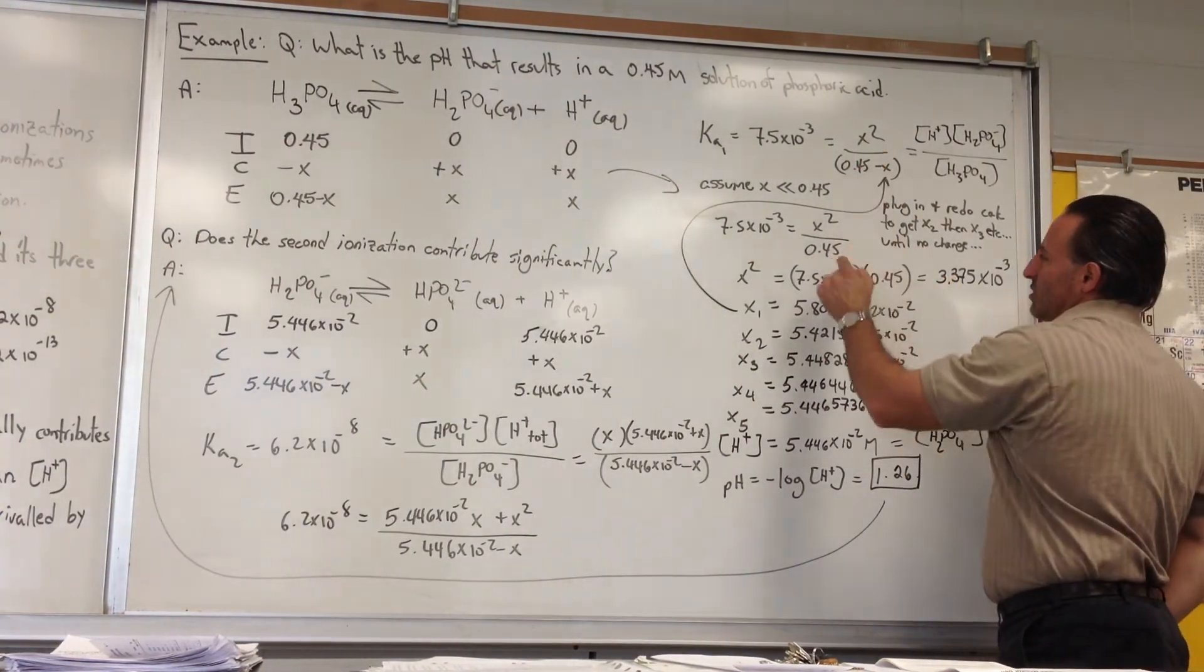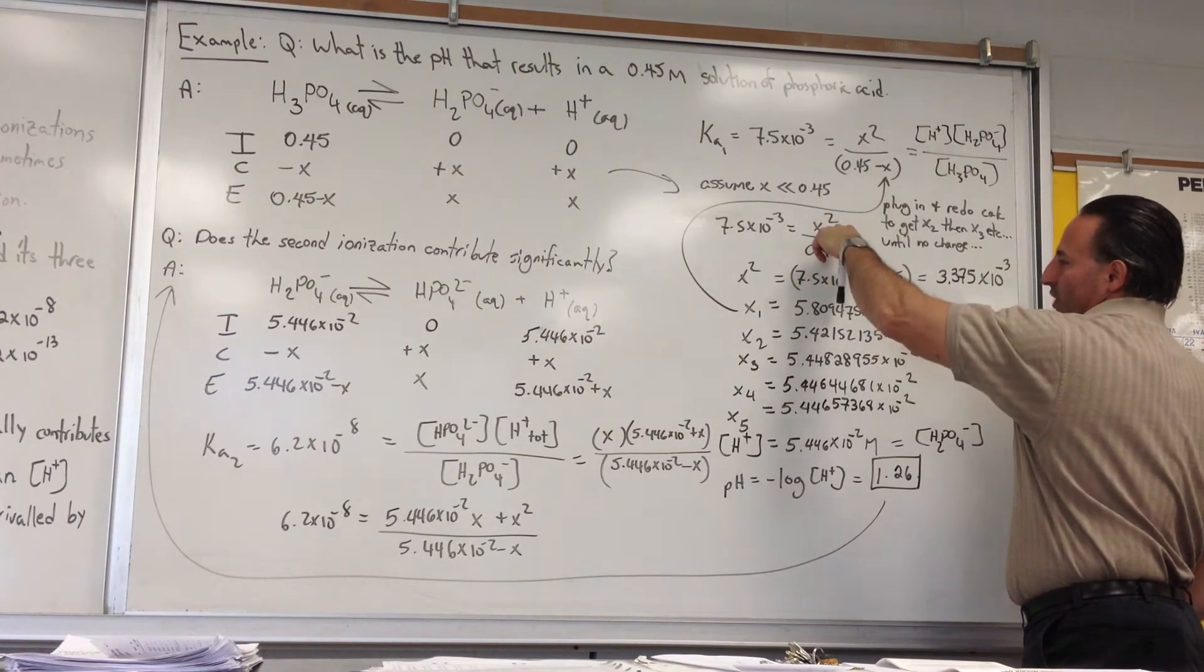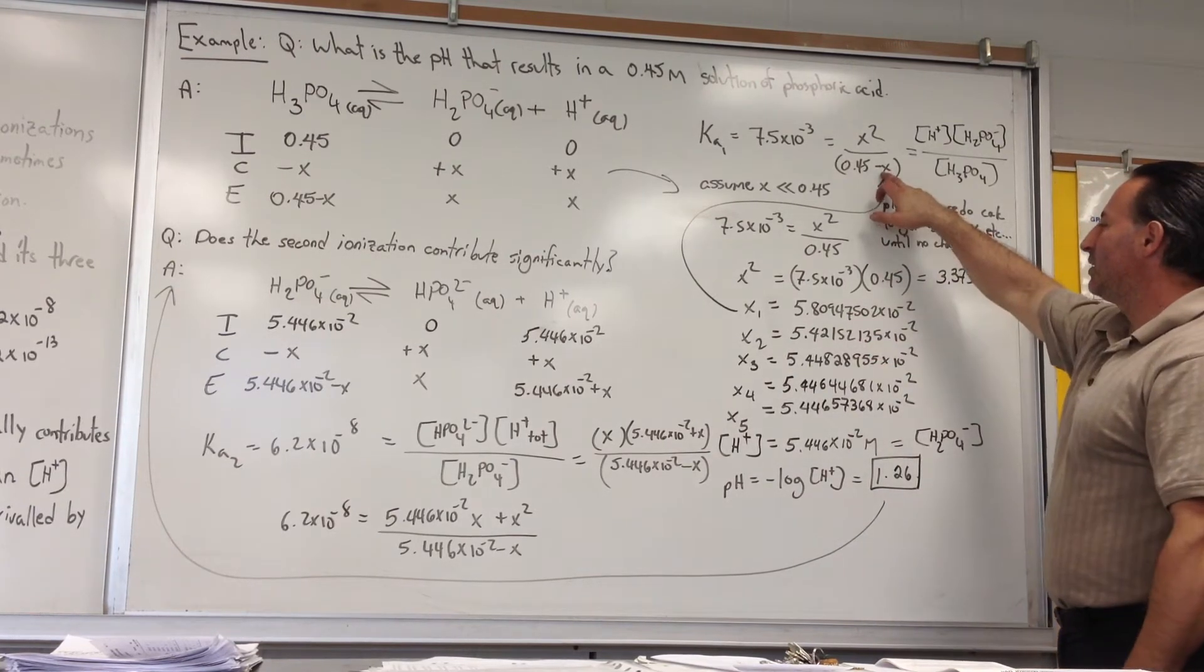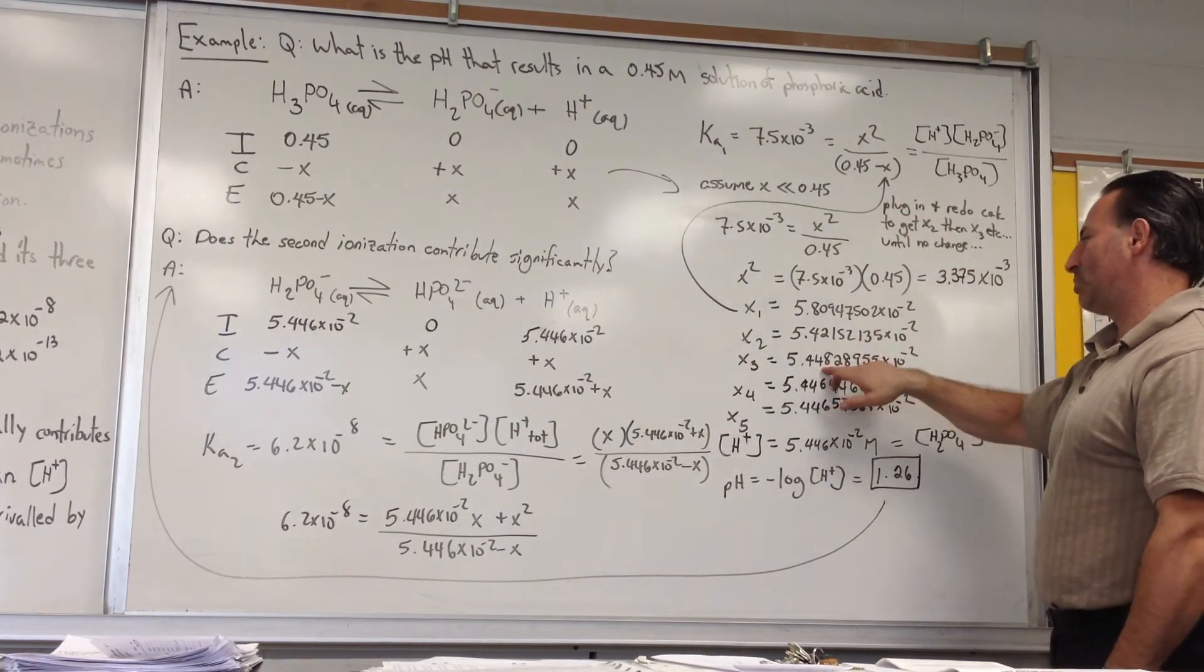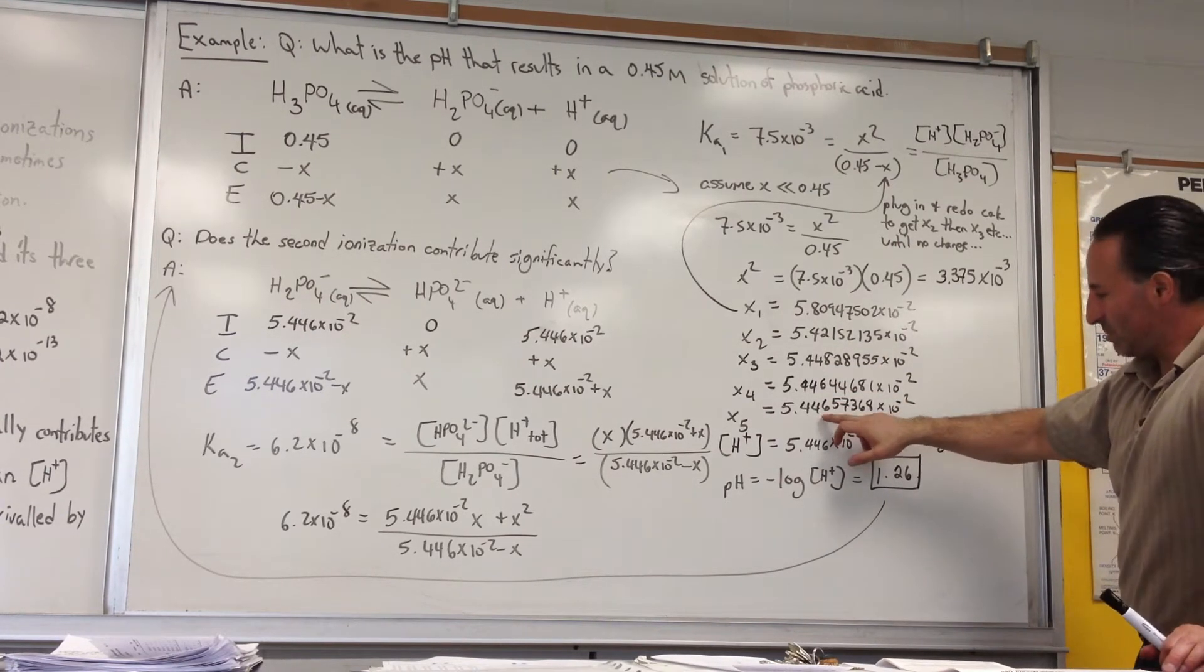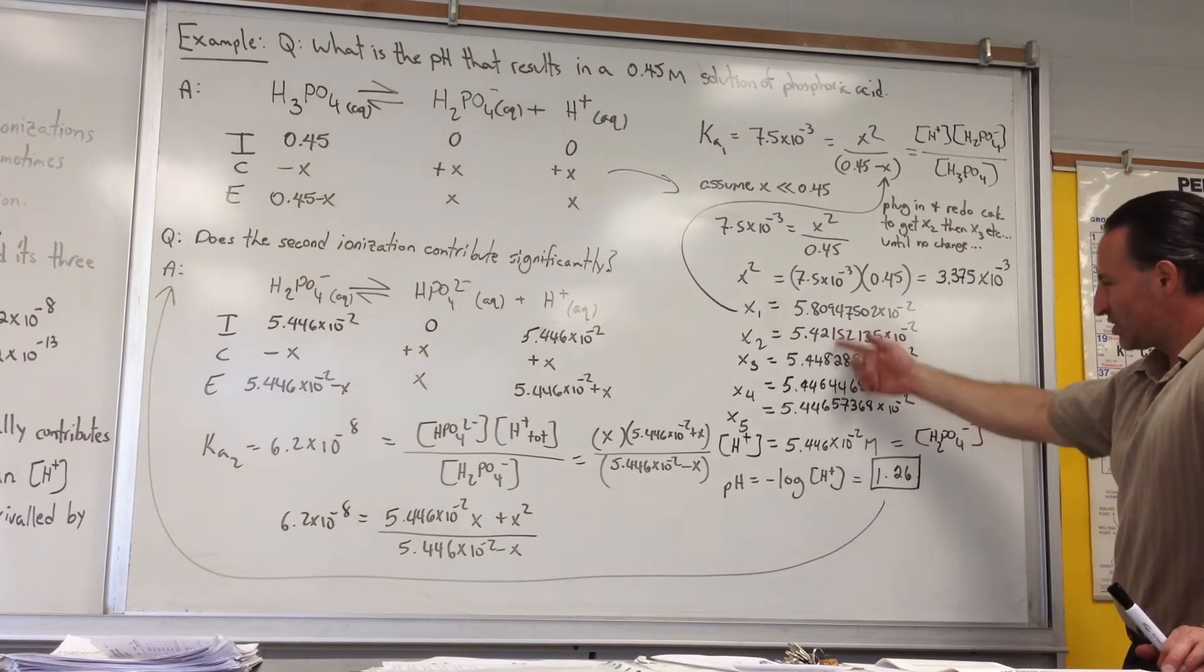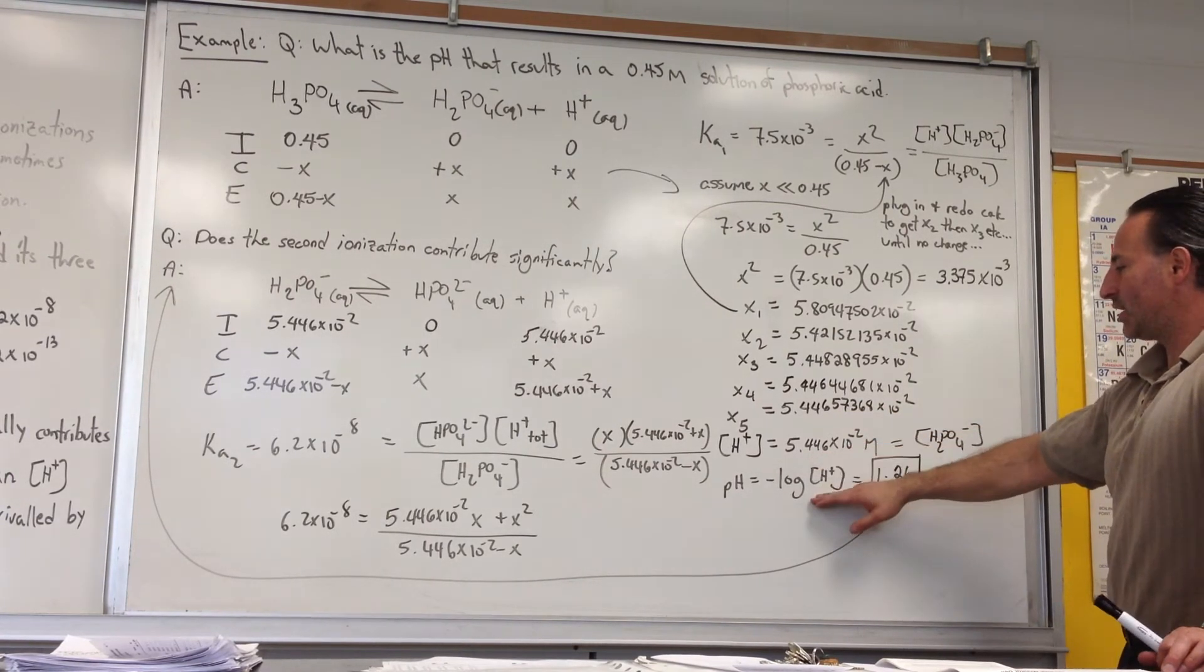I approximated this equation by eliminating the minus X part and then I solve for X squared each time. Each time I get a value for X I plug it back into the original equation. So the first time I solve it I get X1 equals 5.8 times 10 to the minus 2. I take that number, plug it into here, and X sub 2 turns out to be 5.42 times 10 to the minus 2. Then I plug it in again and I get 5.44. Once it remains the same for three iterations or because it's changing only beyond the third decimal place, I know it's going to have no effect on my final value because I can only report it to two significant figures anyway. But just to make sure it went a little further.